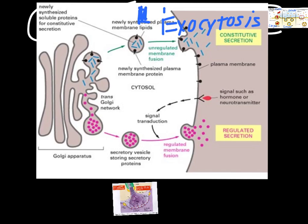We've got our exocytosis set up here. I like this picture because it shows you how this actually works from the Golgi apparatus. There's a lot of extra stuff written on here that you don't need to worry about. All you really need to get is what the picture is representing. You know that the Golgi apparatus takes proteins from the ER, modifies them, sorts them, packages them into vesicles, and sends them to locations inside and outside of the cell — that's something we've gone over many times.